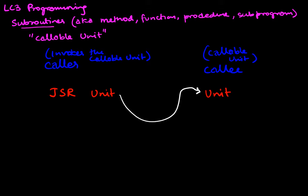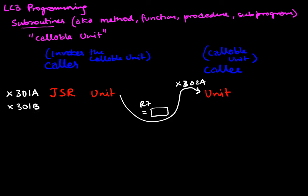An important thing happens in this process: the ISA — the machine — keeps track of where the call was invoked. If the call was invoked at address x301A, then in addition to the PC being set to the subroutine, we also set R7 to be equal to the address where we want to return — x301B — so that's automatically done by the architecture.